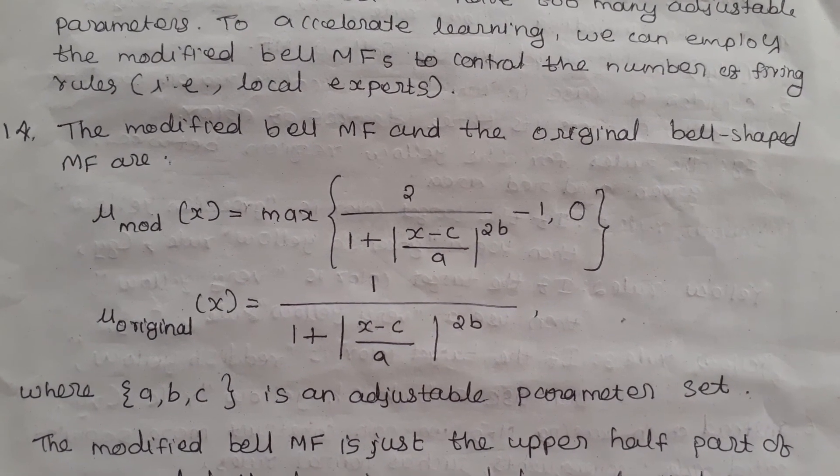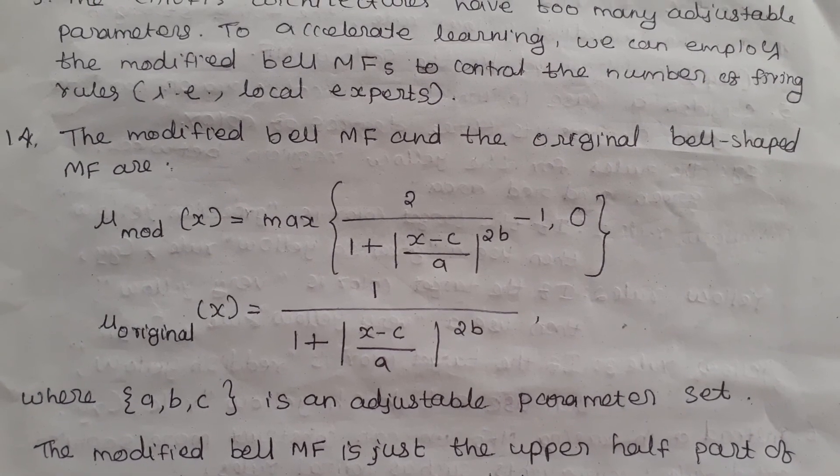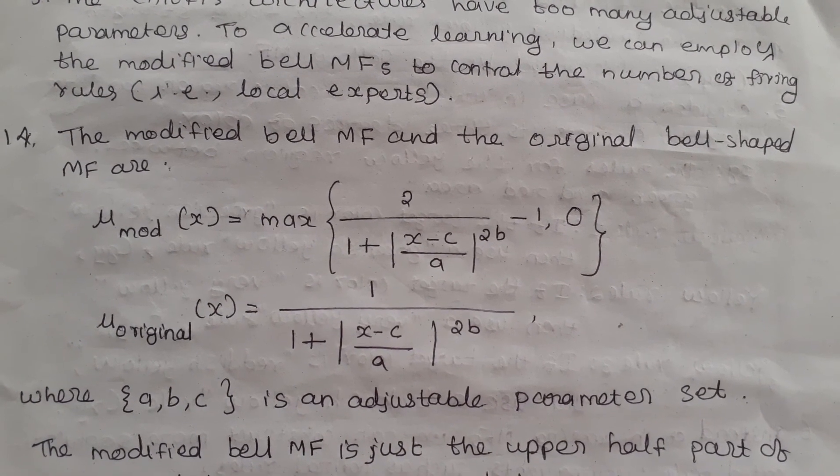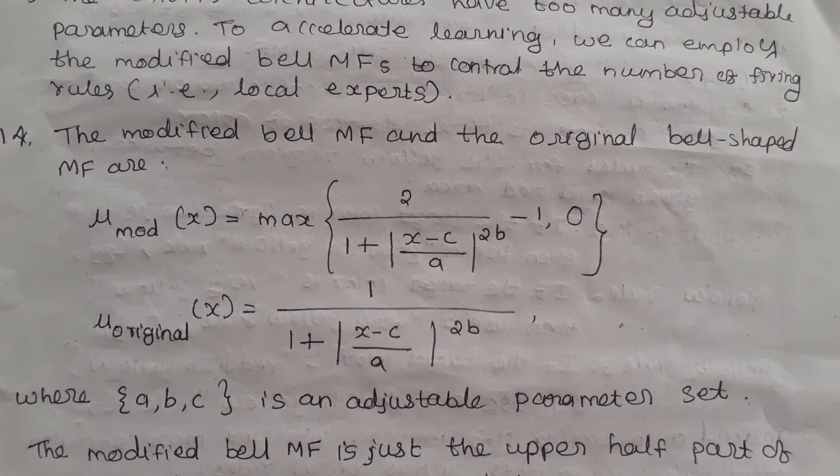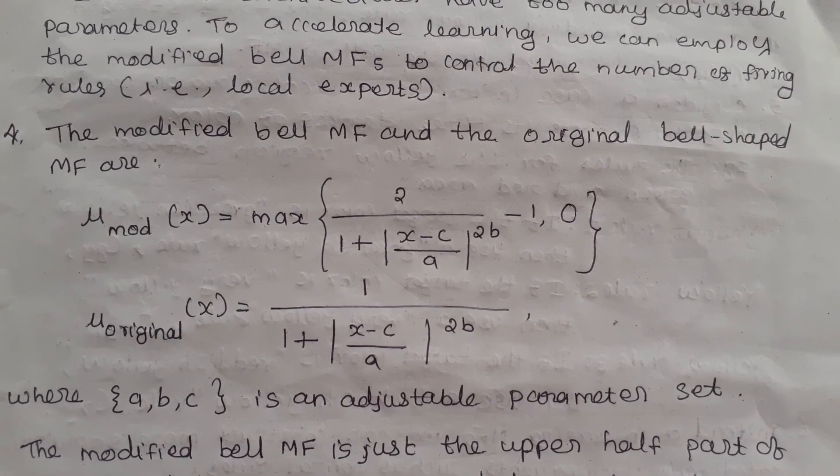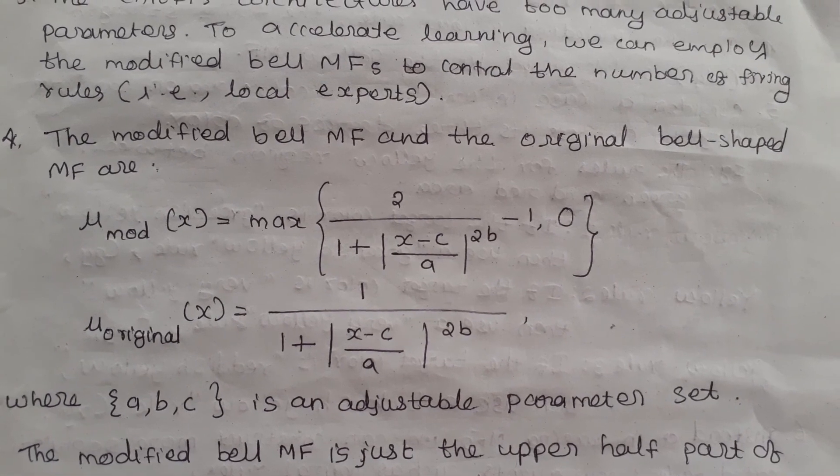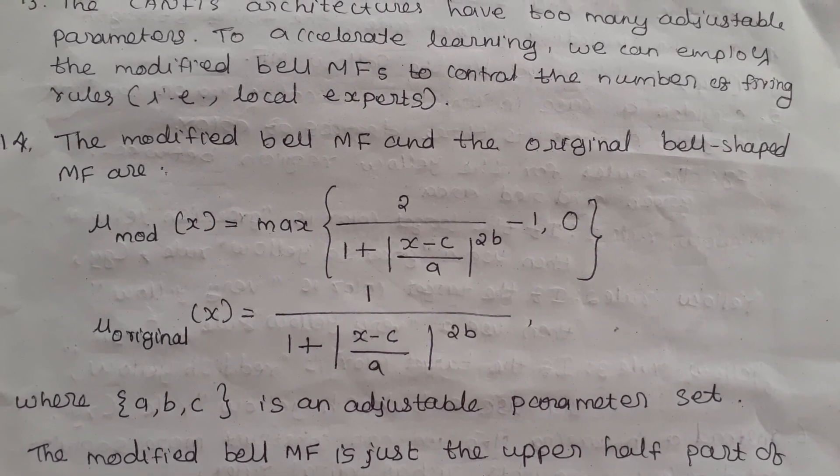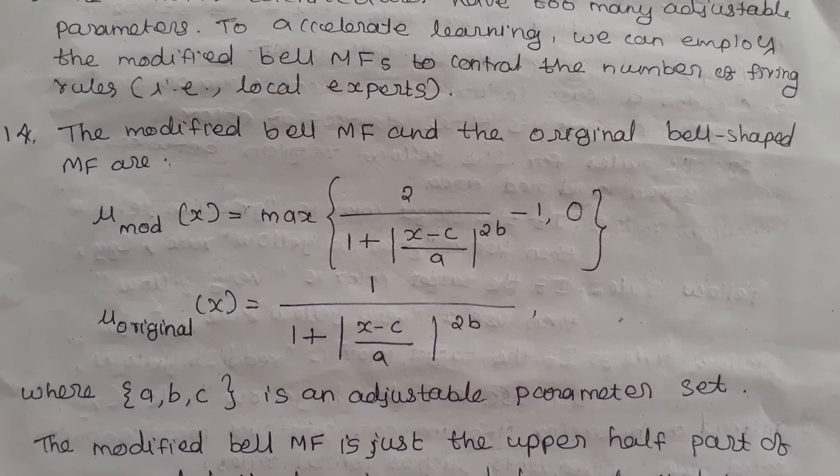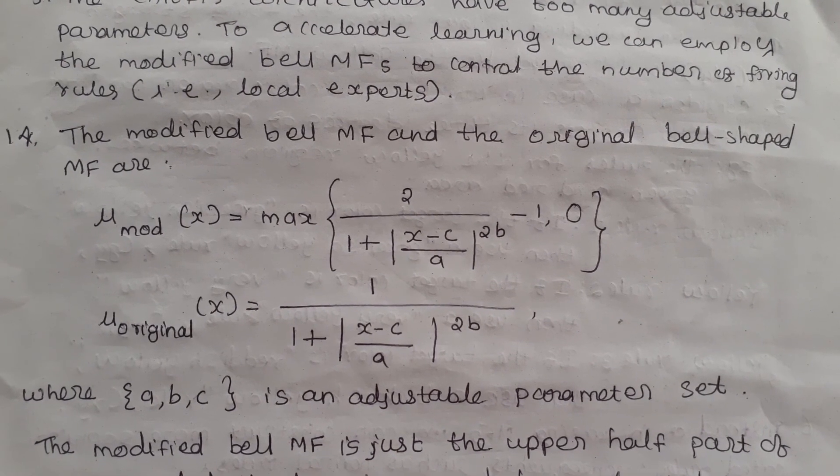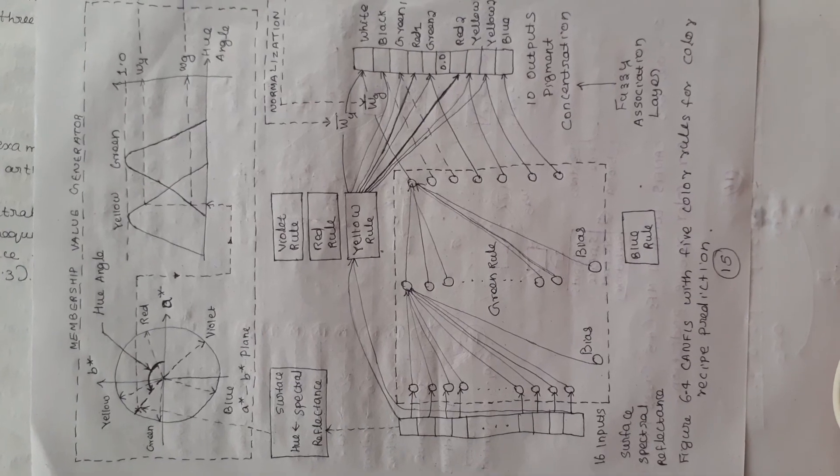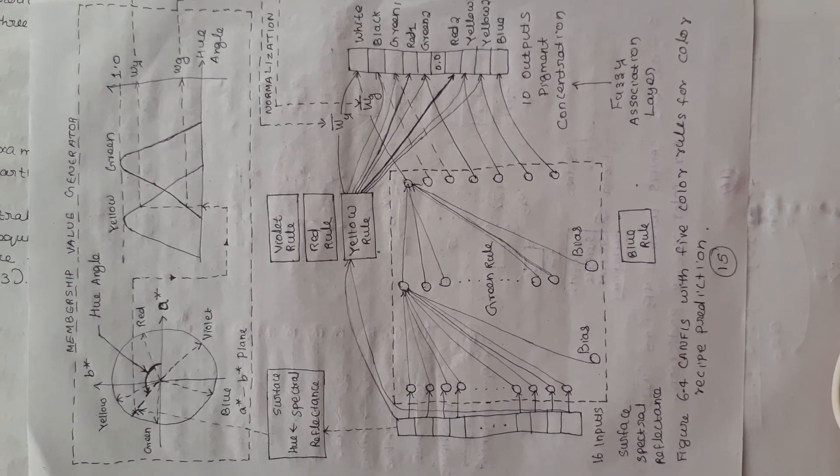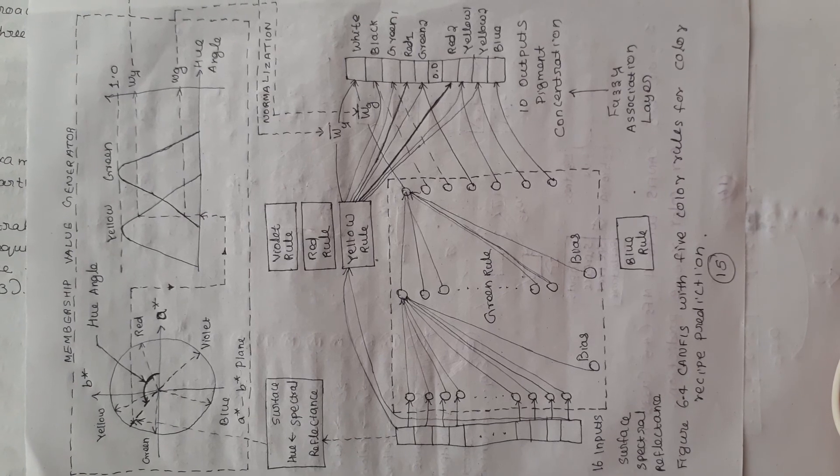The modified bell membership function and the original bell shape membership functions are: mu_mod(x) equals maximum of 2 divided by 1 plus (x minus c divided by a) to the power 2b minus 1, comma 0. Mu_original(x) equals 1 divided by 1 plus (x minus c divided by a) to the power 2b, where the set {a, b, c} is an adjustable parameter set. That is about the architecture of canvas.